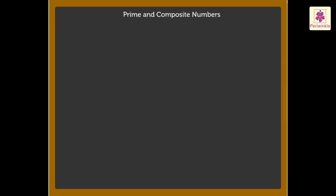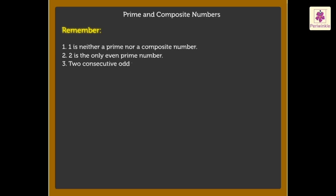Kids, remember: 1 is neither a prime nor a composite number. 2 is the only even prime number. Two consecutive odd primes which differ by 2 are called twin primes.